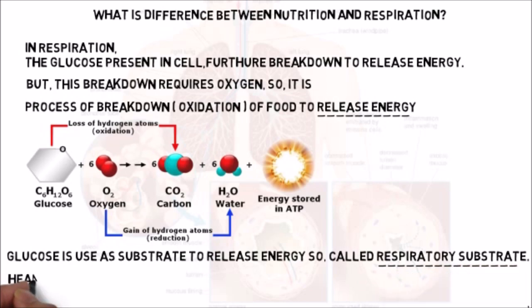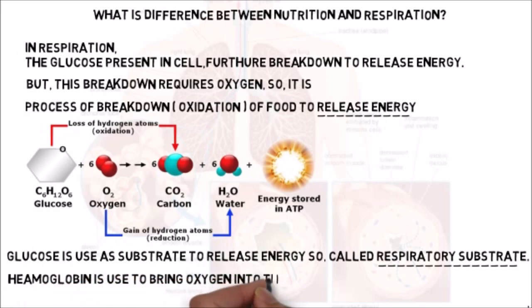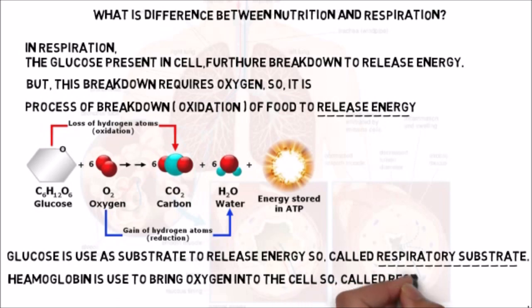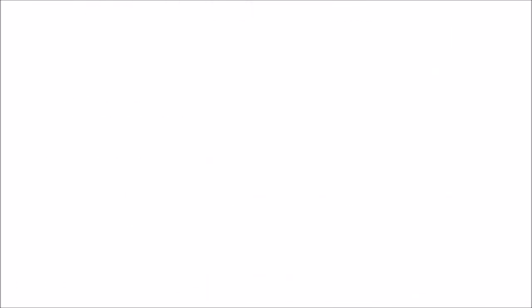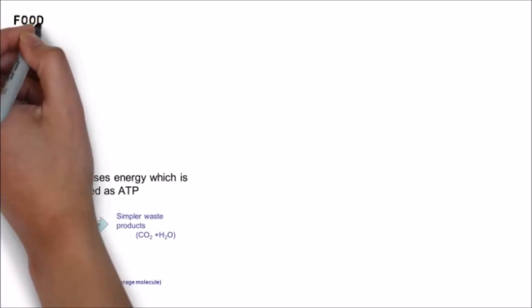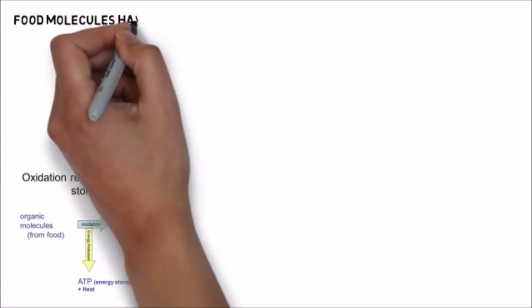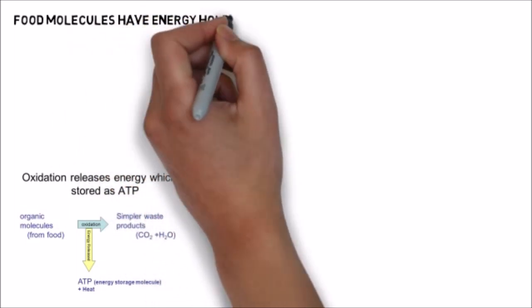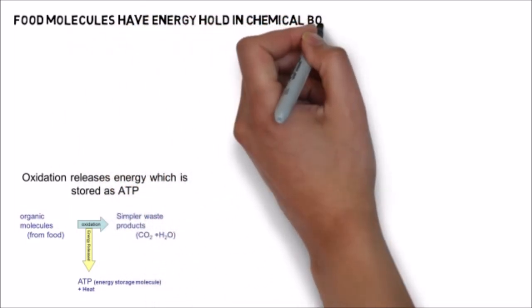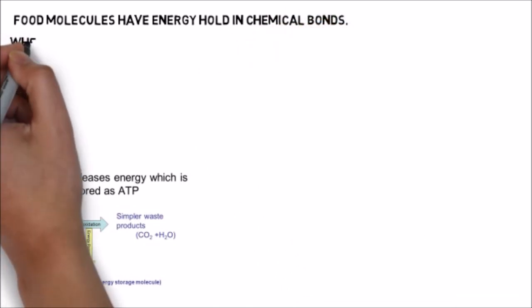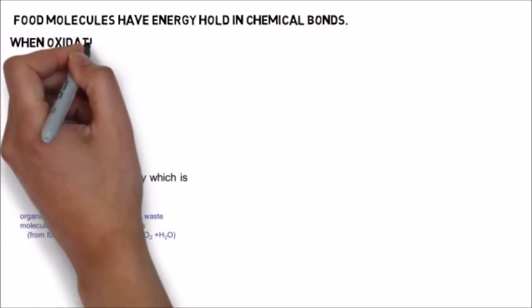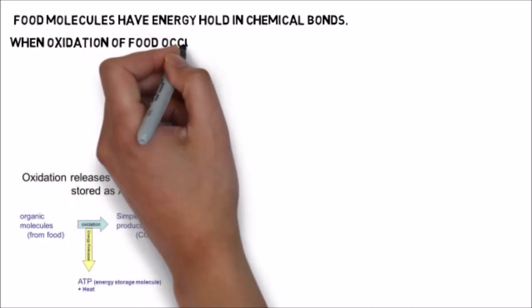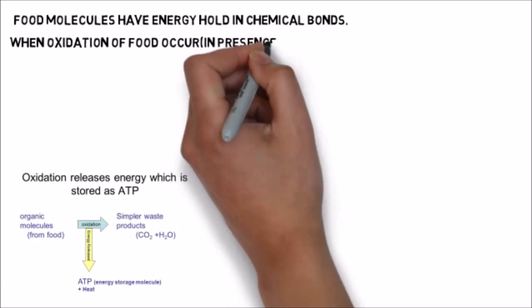Similarly, hemoglobin is used to bring oxygen into the cell, so it is called respiratory pigment. Now, as we said, oxidation of food to release energy is called respiration. How does oxidation of food release energy? The food molecule has energy held in chemical bonds. When oxidation of food occurs in presence of oxygen, it releases energy.